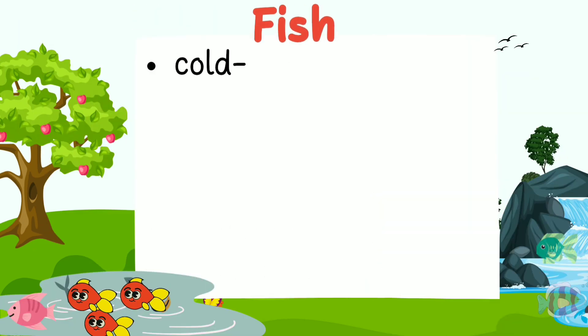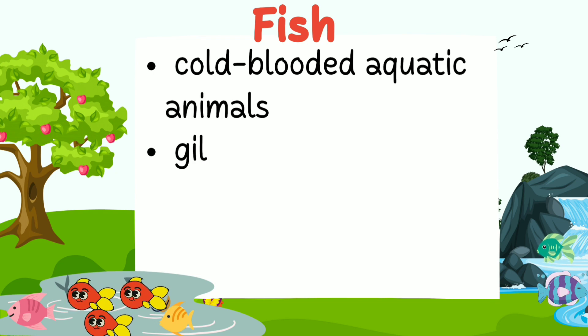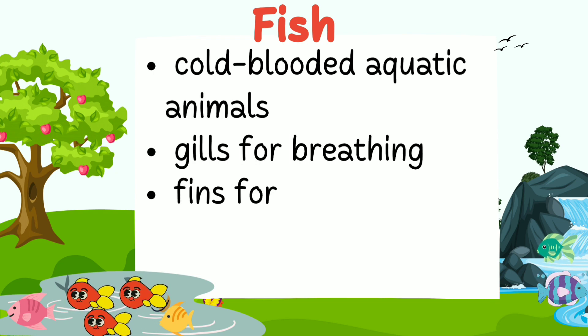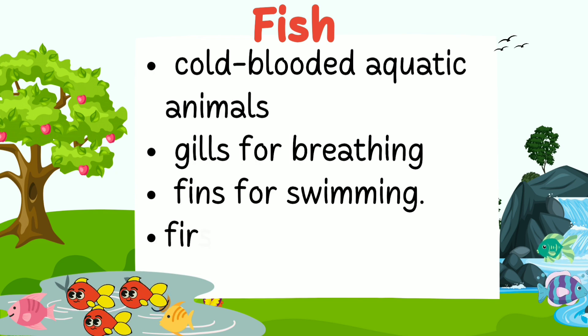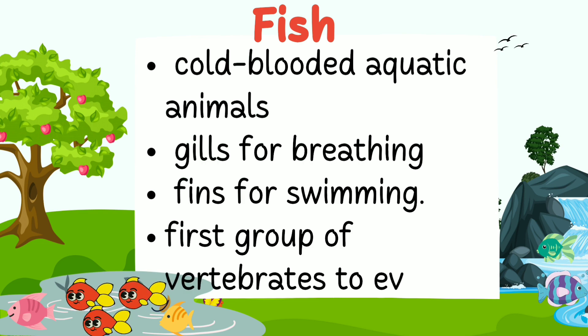Fish are cold-blooded aquatic animals that have gills for breathing and fins for swimming. They are the first group of vertebrates to evolve.